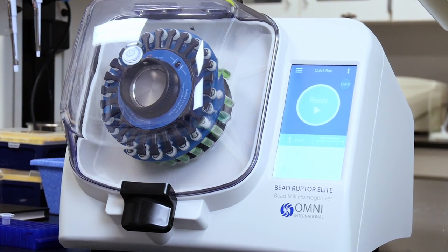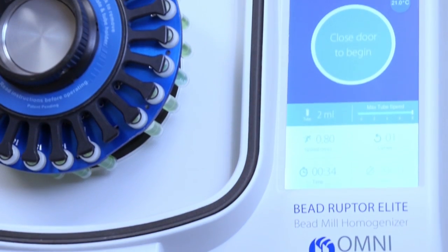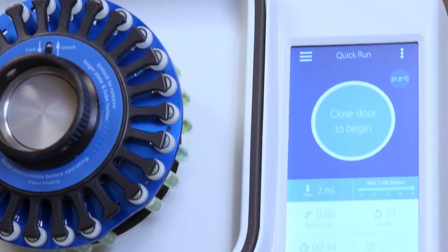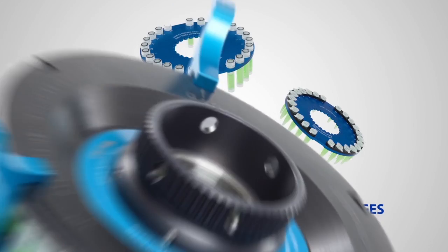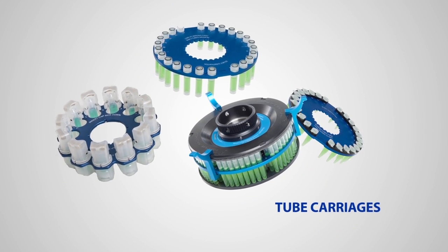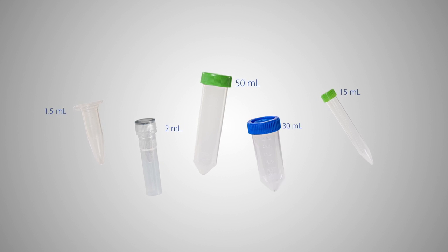With unrivaled versatility, the Omni Bead Ruptor Elite is compatible with the widest range of accessories including an array of interchangeable tube carriages, allowing for sample volumes from as little as 250 microliters to 50 milliliters.